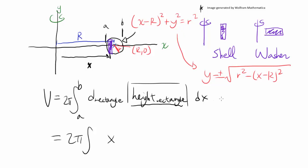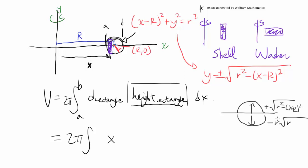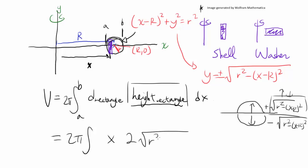The upper semicircle is the positive square root of r² − (x − R)², and the lower semicircle is the negative square root. The entire height of the rectangle spans both, so the total height is 2√(r² − (x − R)²).